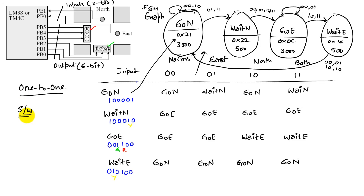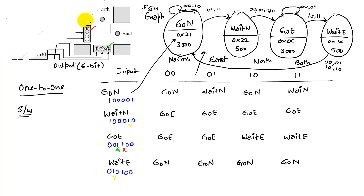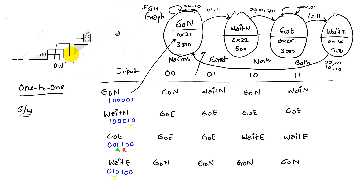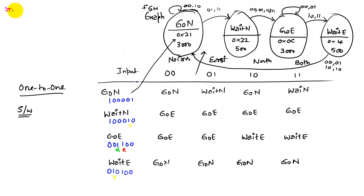Let's do the one-to-one relationship between the graph and the actual software. We'll lay it out as it would appear in our software. We have a state type, and this FSM is going to have four states. Each state will have an output.